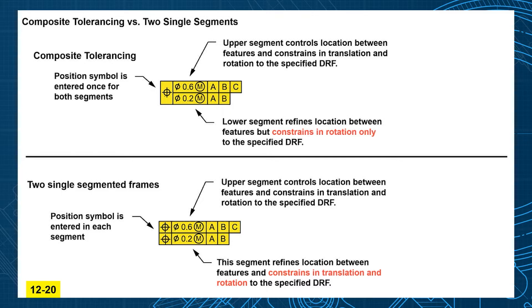This is composite tolerancing, where you use one position symbol that applies for two frames. The upper segment in composite reads just like a normal position tolerance. You're positioning those features within 0.6 relative to the datums.